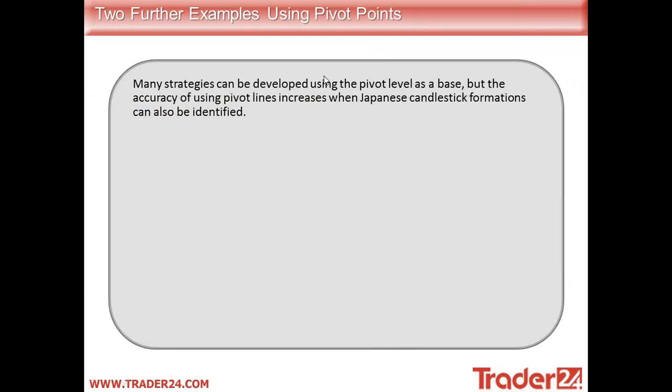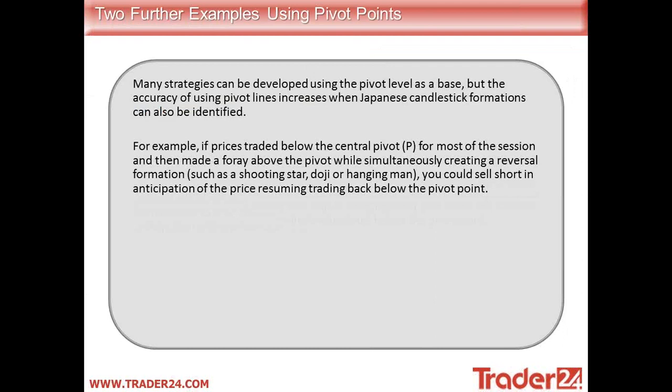Two further examples of using pivot points: many strategies can be developed using the pivot level as a base, but the accuracy of using pivot lines increases when Japanese candlestick formations can also be identified — so we want to use this in conjunction with our other indicators. For example, if prices trade below the central pivot point for most of the session and then make a brief move above the pivot point while simultaneously creating a reversal formation such as a shooting star, doji, or hanging man, you can sell short in anticipation of the price resuming trading back below the pivot point.